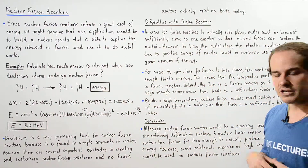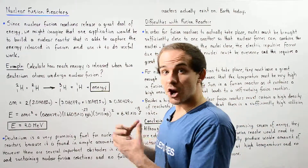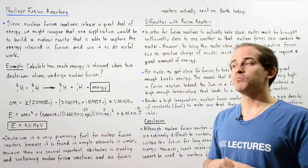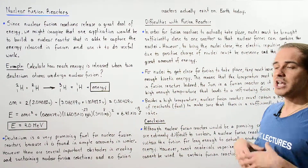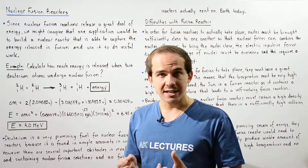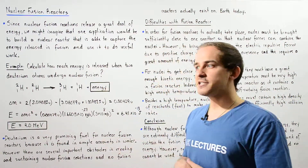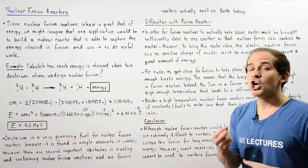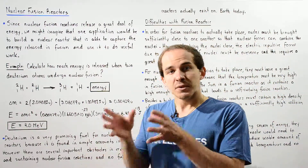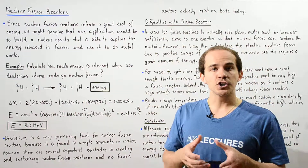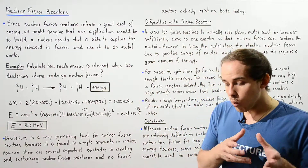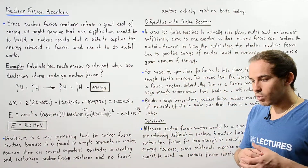Some of that energy eventually reaches the Earth and powers different types of processes, such as the process that takes place inside plants known as photosynthesis. Plants are able to convert carbon dioxide and water...